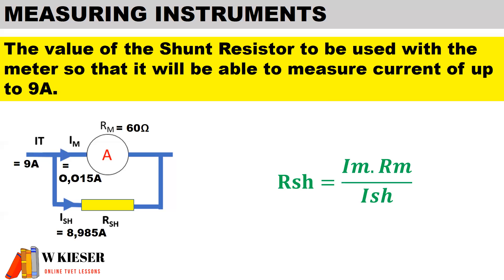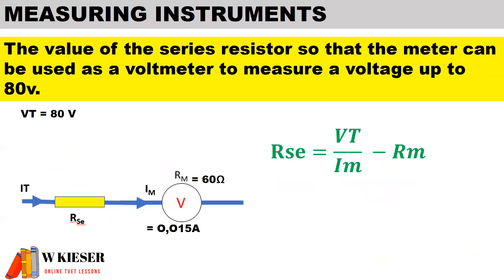To determine the shunt current, we take the total current of 9 amps minus the current flow through the meter. Using the formula from the formula sheet, the current flow through the meter is 0.015 amps, the resistance of the meter is 60 ohms, and the shunt current is the difference between the supply current and the meter current. Therefore, to measure current, the resistor in parallel with the meter is 0.1 ohms.